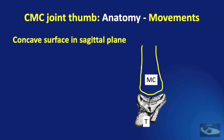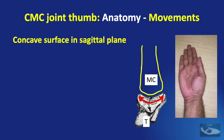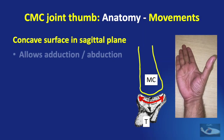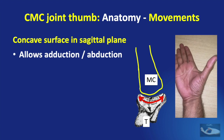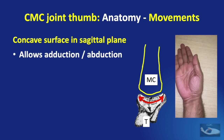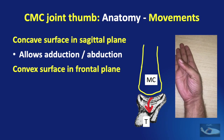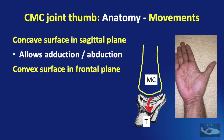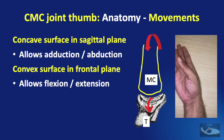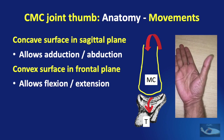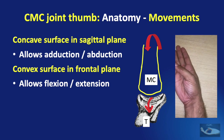The first metacarpal bone is the rider that sits on the saddle of the trapezium. The concave surface is seen in the sagittal plane and allows adduction and abduction. The trapezium has a convex surface in the frontal plane and it allows flexion and extension movements.